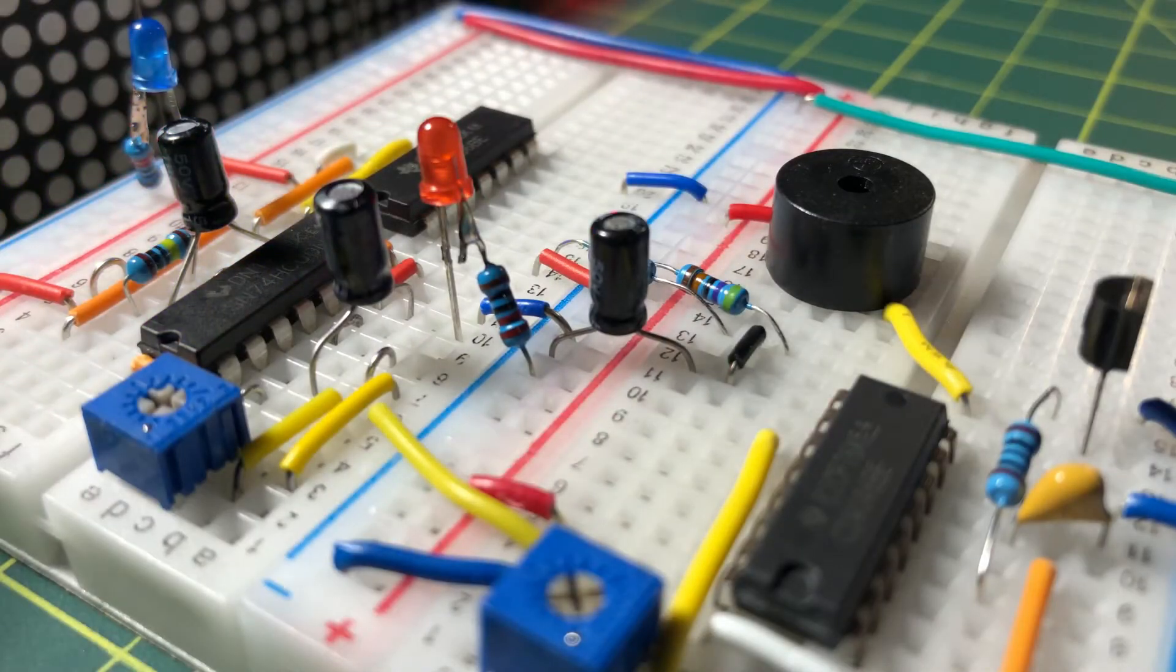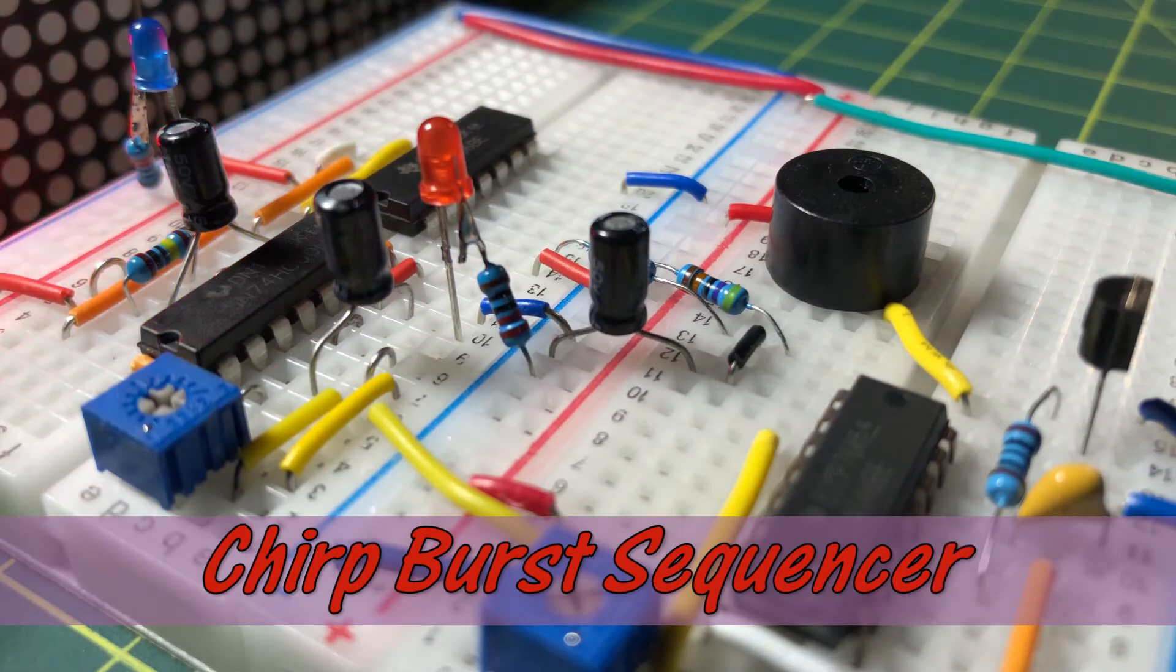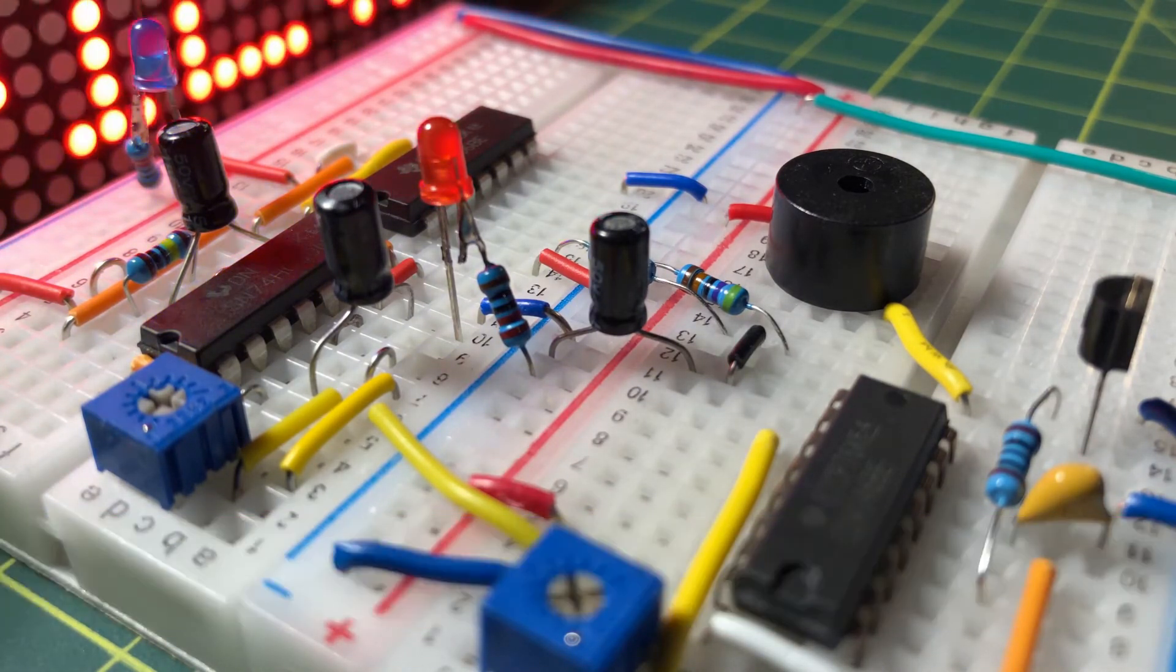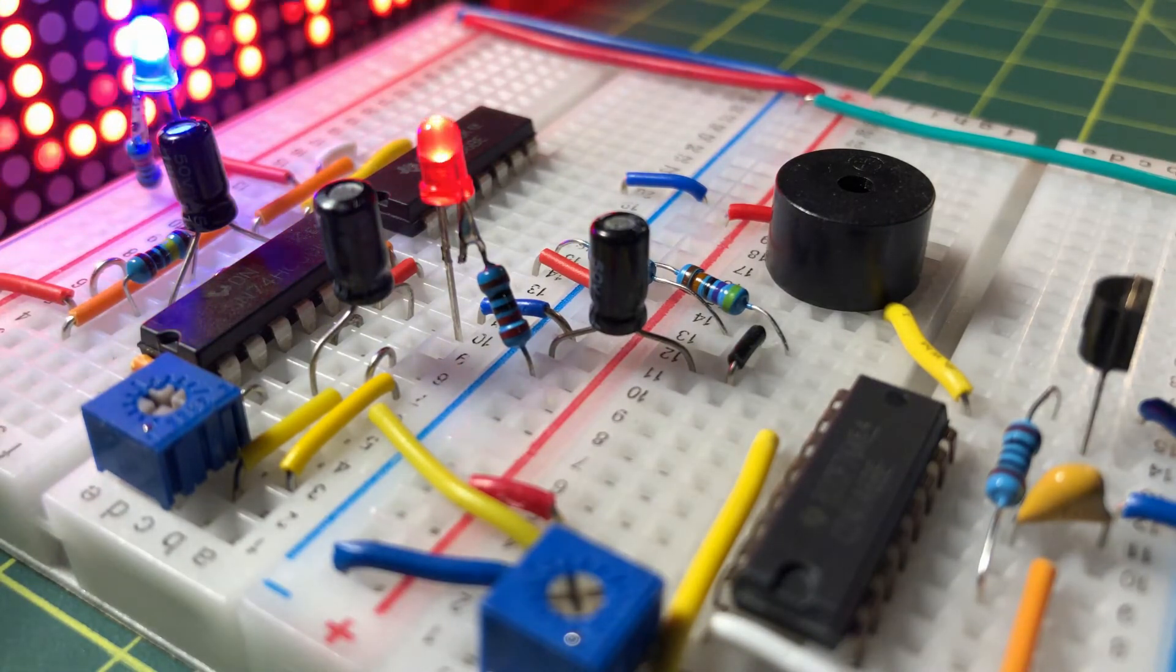In this video, another circuit by Forrest MIMS will be presented, namely the chirp burst sequencer, based on the voltage controlled oscillator found in CMOS IC CD4046.